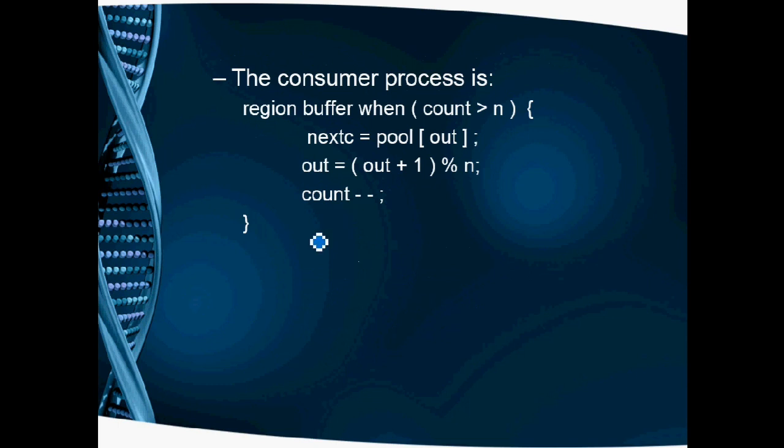For the consumer process: region buffer when count greater than zero. We use the out variable to take the item from the buffer, then increment out. After consuming an item, we decrement the count value. This is how to use critical region.